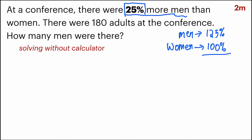That goes to say that the total percentage will become 225%, and I can equate that to 180 adults. So you're finding how many men were there. You are finding 125%.